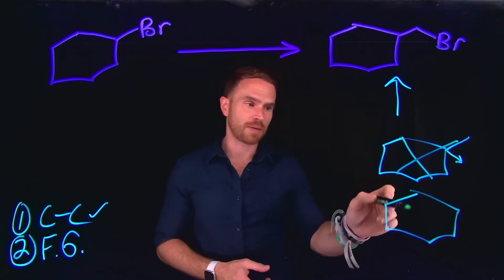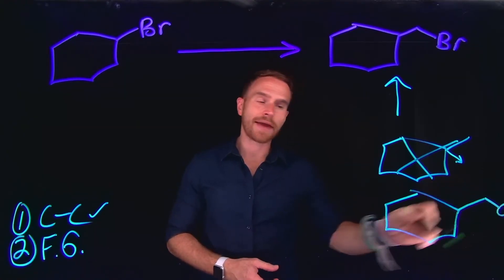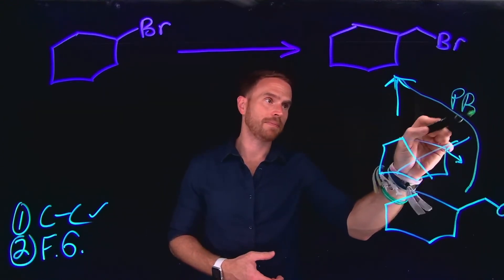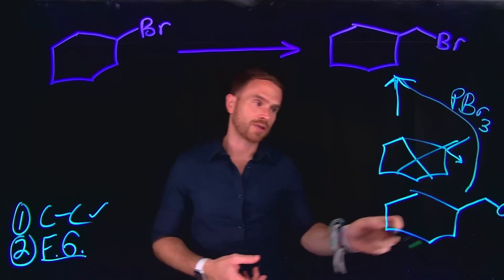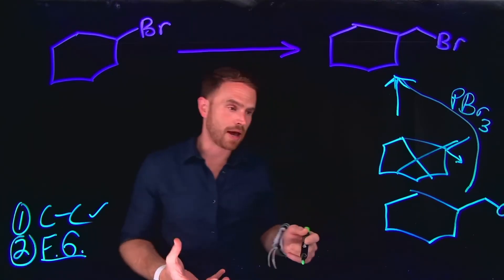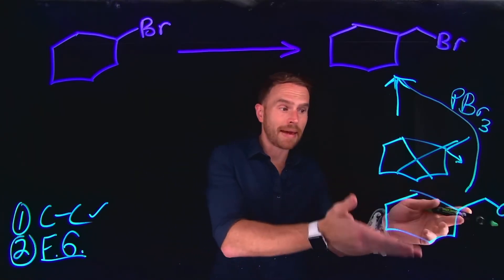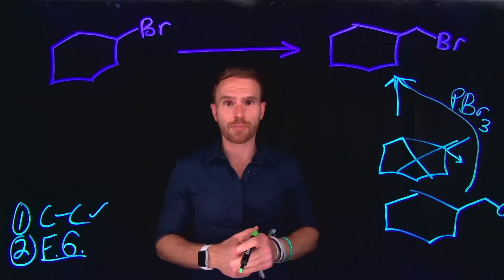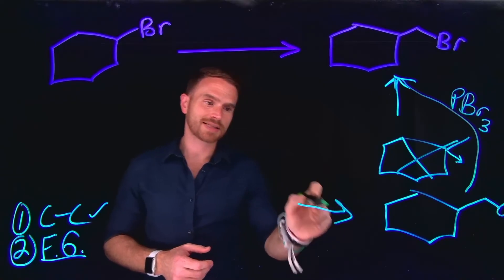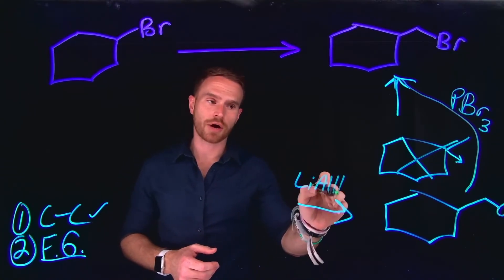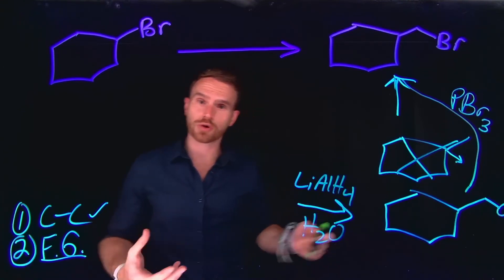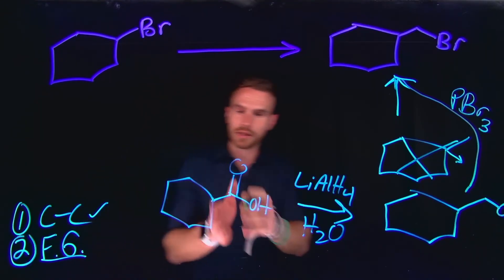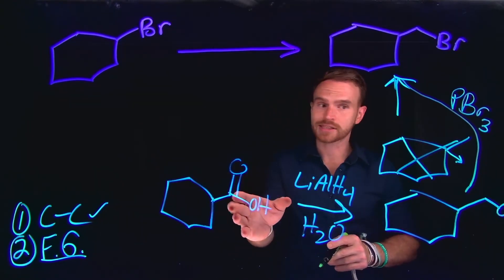Another way I know to make alkyl bromides is to convert alcohols into bromides — for that I can use PBr3. I could use a cyclohexane ring with a CH2 and an OH group, and PBr3 allows me to do a functional group transformation of an alcohol into a bromine. The next question is: what type of reaction might allow me to make this alkyl alcohol? One of those is reduction of a carbonyl compound. For example, if we had a carboxylic acid, we could use lithium aluminum hydride (LAH) to do a reduction in the presence of water, which would turn a carboxylic acid into an alcohol.